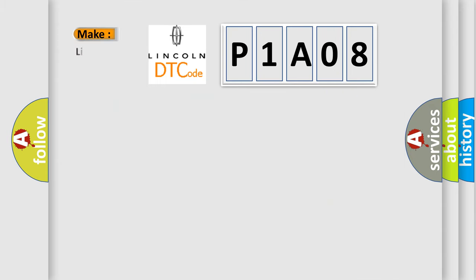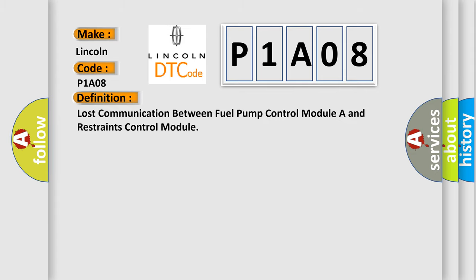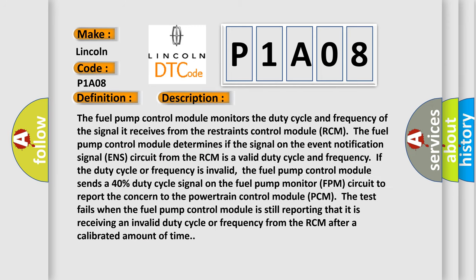So, what does the diagnostic trouble code P1A08 interpret specifically? For Lincoln car manufacturers, the basic definition is: Lost communication between fuel pump control module and restraints control module. The fuel pump control module monitors the duty cycle and frequency of the signal it receives from the restraints control module (RCM). If the duty cycle or frequency is invalid, the fuel pump control module sends a 40% duty cycle signal on the fuel pump monitor (FPM) circuit to report the concern to the powertrain control module (PCM).